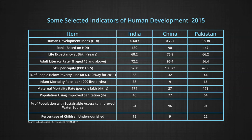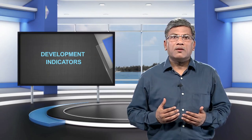Higher HDI ranking also mirrors better performance of a country with regard to availability of essential goods and services to the people, improved sanitation facilities, better health services and better nourishment. Infant mortality rate is highest in Pakistan and lowest in China, displaying the status of availability of health care facilities in these countries. Maternal mortality rate is 27 per lakh births in China, as compared to 174 in India and 178 in Pakistan.